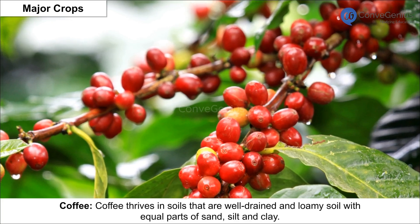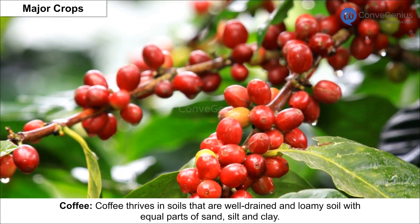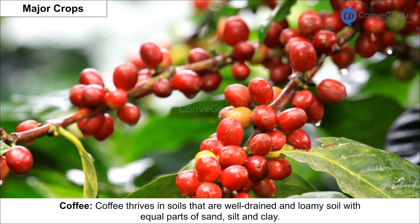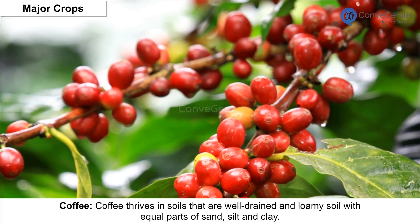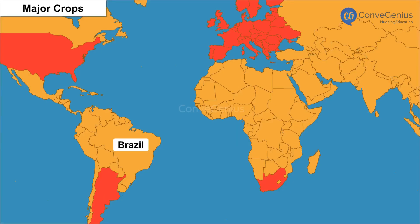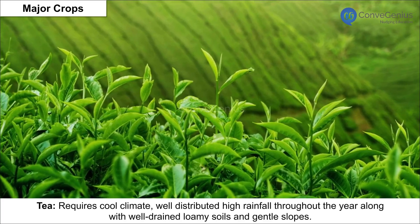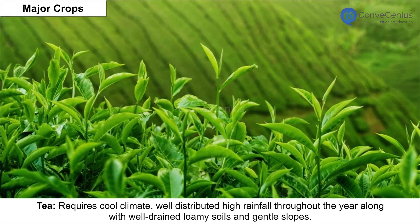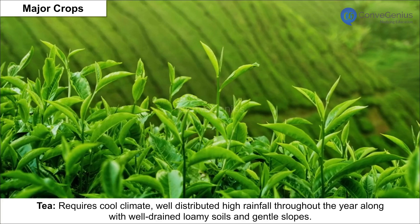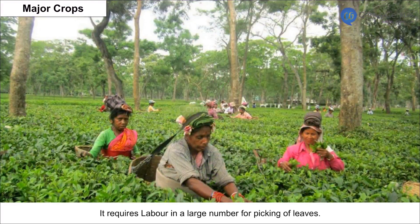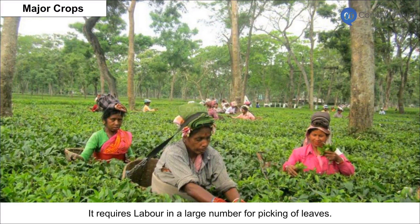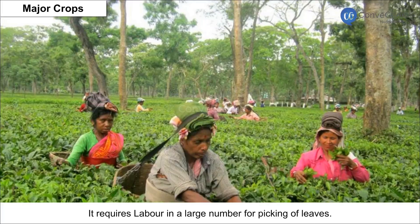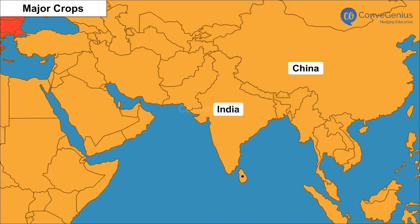Coffee thrives in well-drained loamy soil with equal parts of sand, silt and clay. Brazil is the leading producer, followed by Colombia and India. Tea requires a cool climate, well-distributed high rainfall throughout the year, well-drained loamy soils and gentle slopes. It requires a large number of labourers for picking leaves. India, China and Sri Lanka are the best producers of tea.